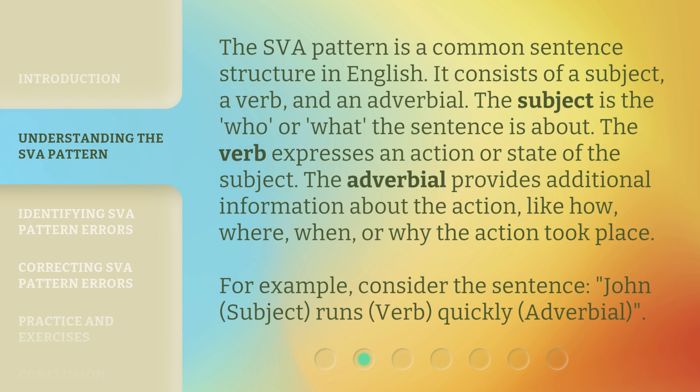The SVA pattern is a common sentence structure in English. It consists of a subject, a verb, and an adverbial. The subject is the who or what the sentence is about. The verb expresses an action or state of the subject. The adverbial provides additional information about the action — like how, where, when, or why the action took place.